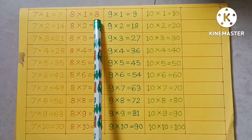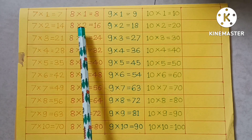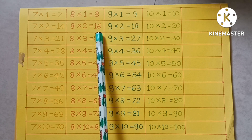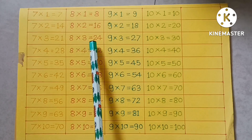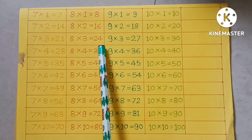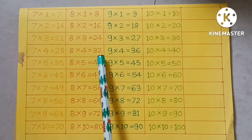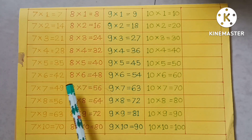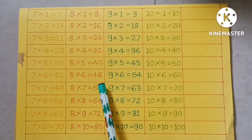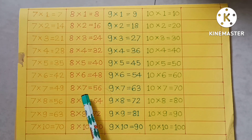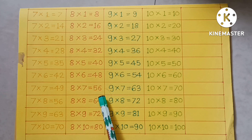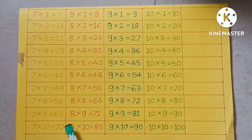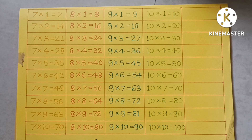8×1=8, 8×2=16, 8×3=24, 8×4=32, 8×5=40, 8×6=48, 8×7=56, 8×8=64, 8×9=72, 8×10=80.